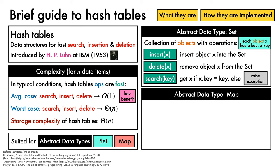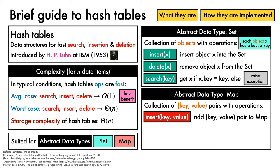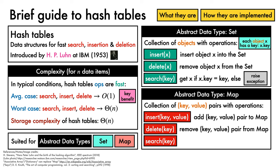The map abstract data type corresponds to a collection of key-value pairs, also with associated operations. These include insert key-value, which adds a given key-value pair to the map, delete key, which removes the key-value pair with the given key from the map, and search key, which gets the value associated with the given key if present, and if not, raises an exception.